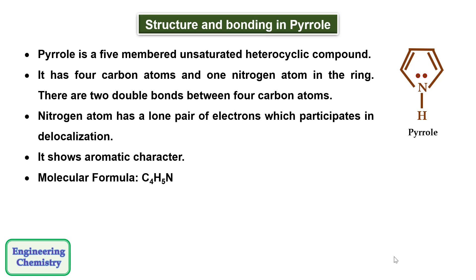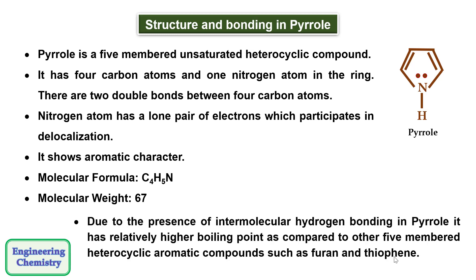Its molecular formula is C4H5N and its molecular weight is 67. Due to the presence of intermolecular hydrogen bonding in Pyrrole, it has a relatively higher boiling point compared to other five-membered heterocyclic aromatic compounds such as furan and thiophene.